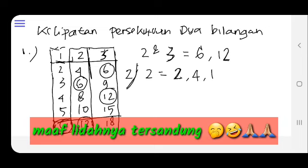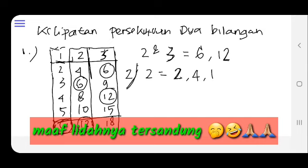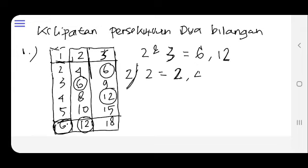2 kali 2 adalah 4. Salah, 2 kali 3 dulu ya, kita lewat, maaf ya. 2 kali 2 adalah 4, 2 kali 3 adalah 6, 2 kali 4 adalah 8, 2 kali 5 adalah 10, 2 kali 6 adalah 12. Ini kita sampai terus ya sampai angka 10 ya karena ini muat. 2 kali 7 adalah 14.